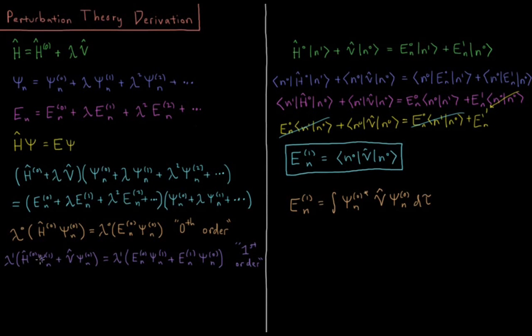The first non-trivial result is first-order perturbation theory. Lambda to the 1, we get two terms on each side. H0 psi1 plus V acting on psi0 equals E0 psi1 plus E1 psi0. So what are we going to do with this? I'll put these into Dirac notation where psi1n is indicated by this n with a subscript 1. So ground state wave function psi n is n0. First-order wave function is n1. So we have H0 n1 plus V acting on n0 equals E0 n1 plus E1 n0.